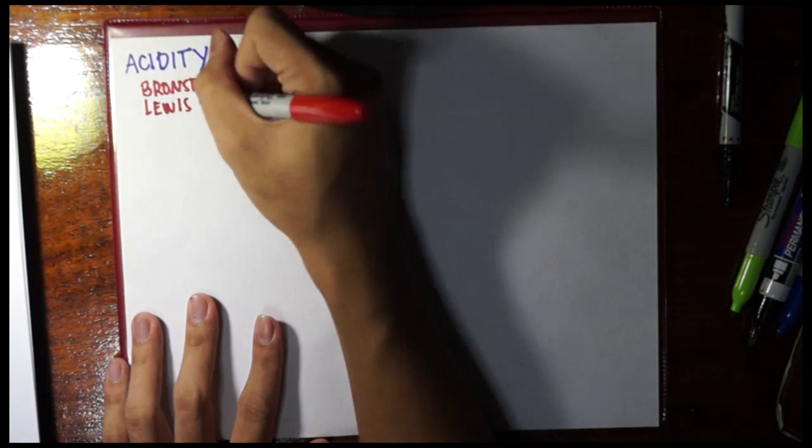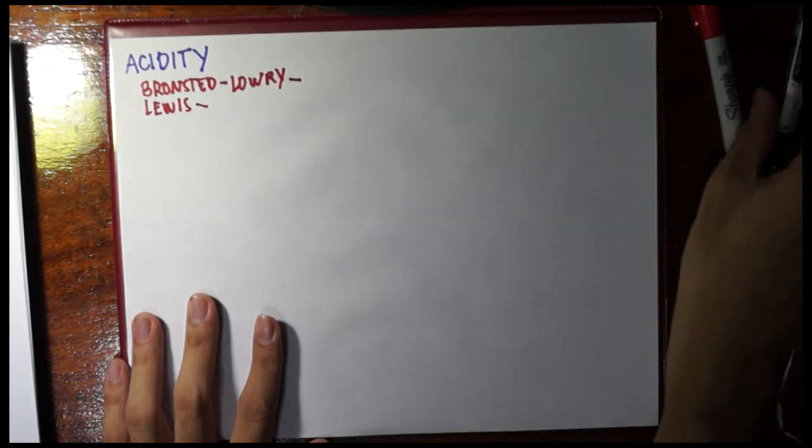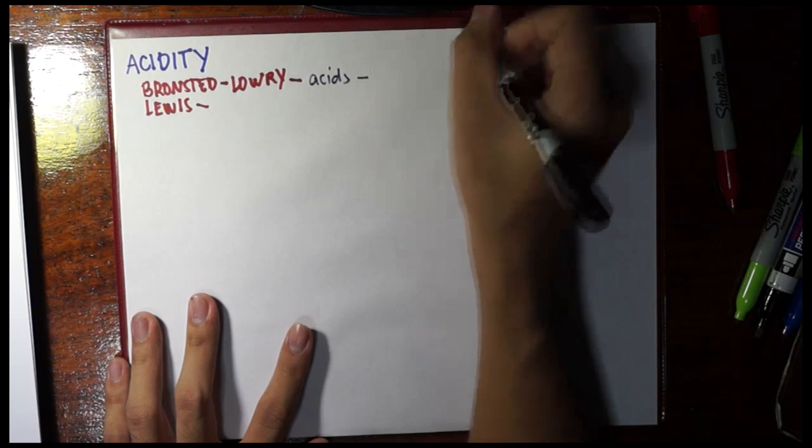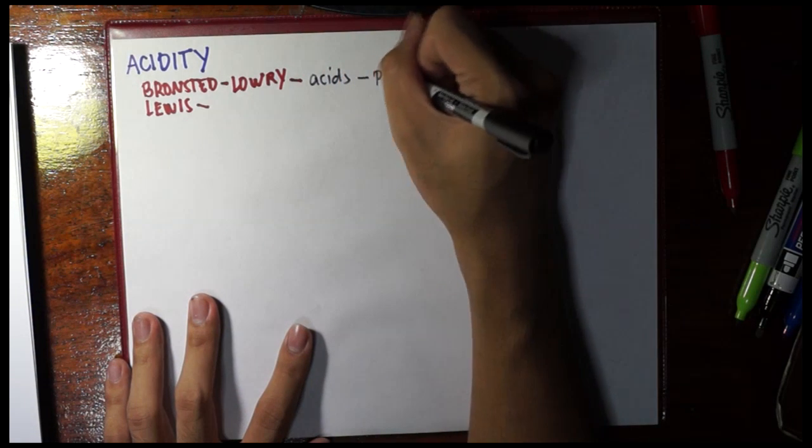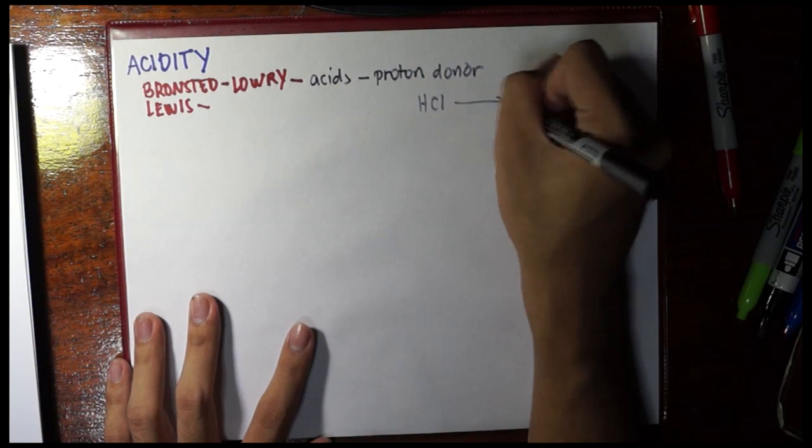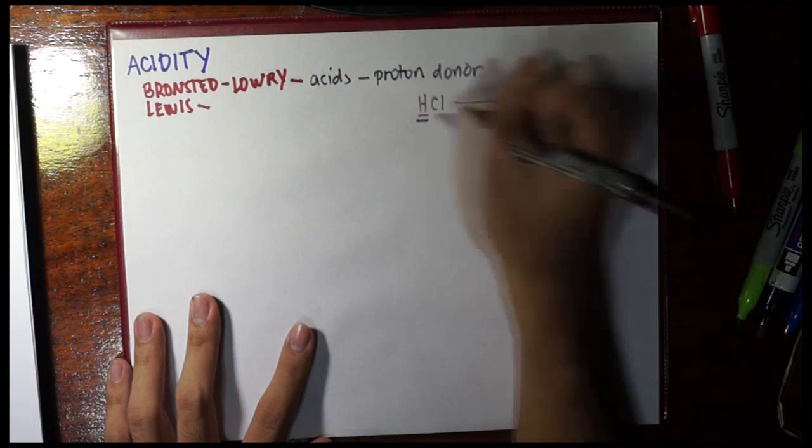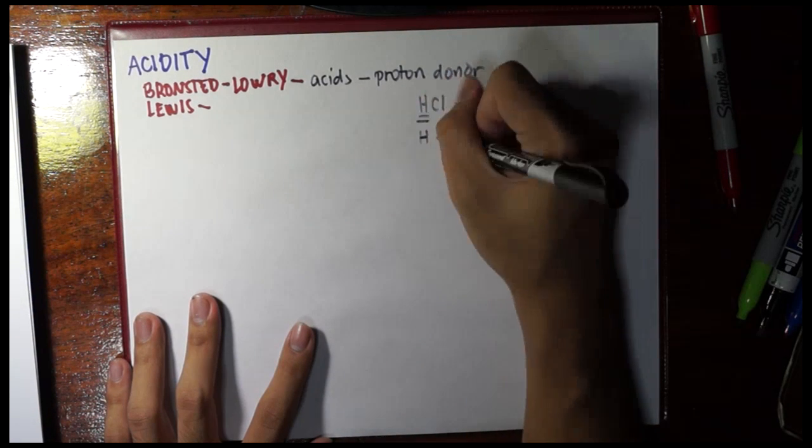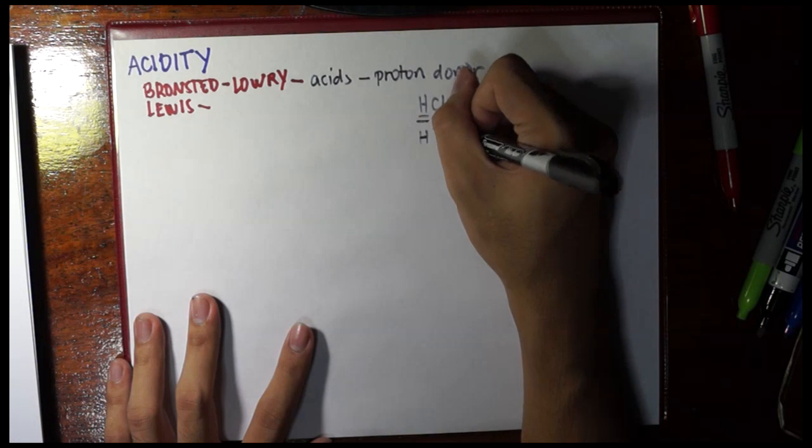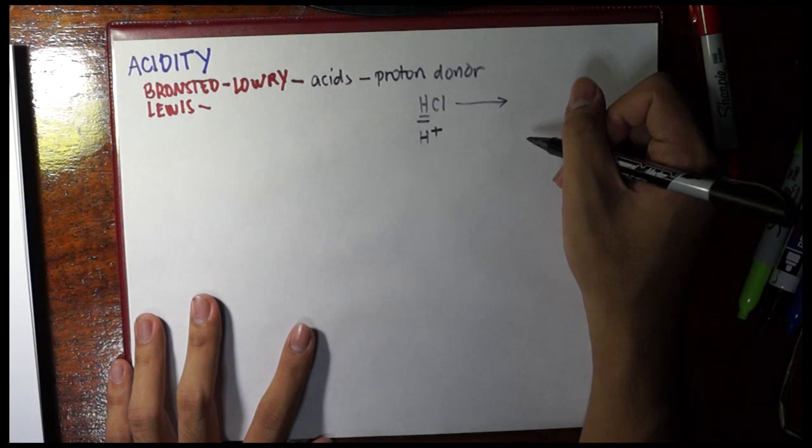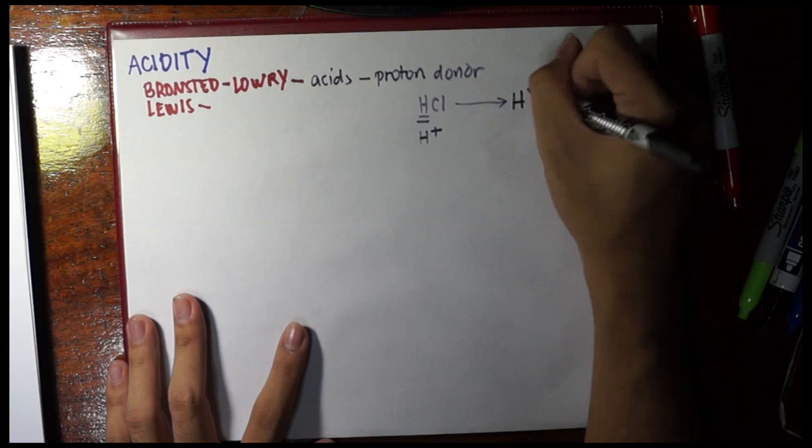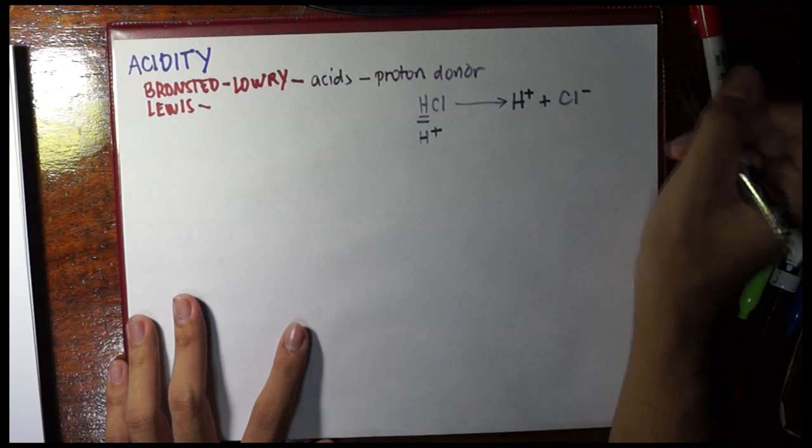Bronsted-Lowry and Lewis definition. Actually, I prefer just using Bronsted-Lowry definition for acids for organic chemistry. Because a Bronsted-Lowry acid is a proton donor. That's why, for example, I have HCl here. In the first place, we always have an H in an acid because if H has one electron and one proton, you remove that electron, it will technically be just a proton. H positive is technically a proton. So if HCl dissociates in water, you would get a proton and chloride.